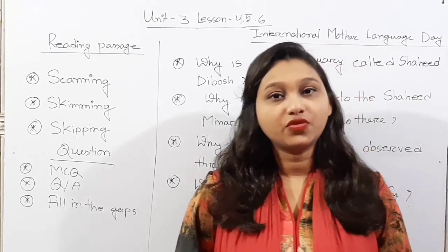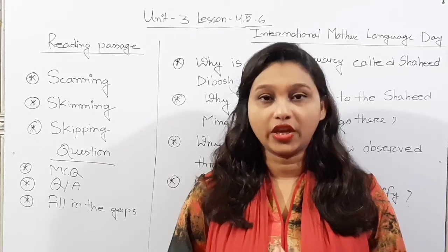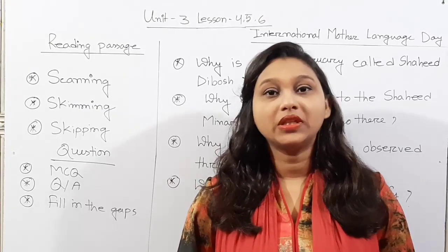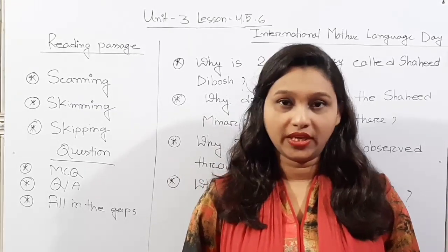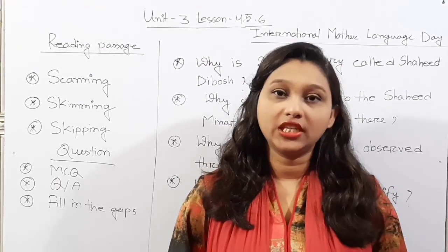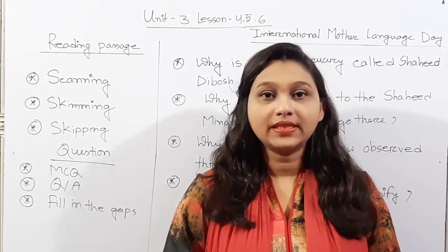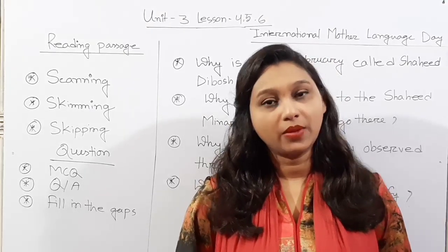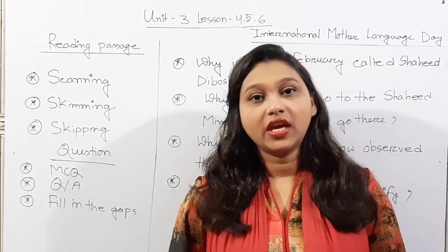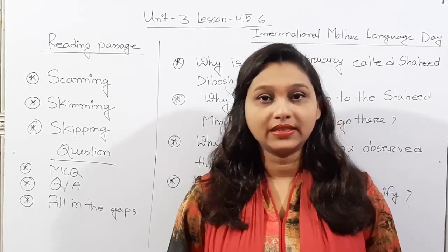As you know, in the English First Paper you will find 3 passes. From the first pass you will find the EFT book, and from the third pass you will find 80 marks. From the first pass you have to answer MCQ and question-answer, and from the second pass you have to answer fill in the blanks.